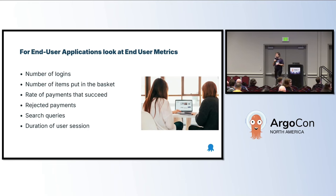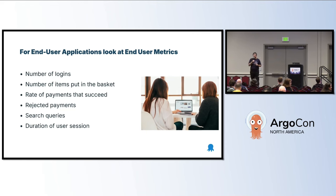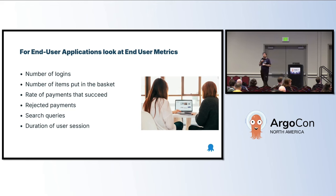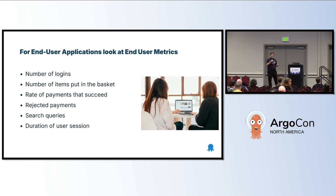Specifically for end-user applications — like applications with real humans — you should look at metrics that make sense for the humans. For example, for an eShop application, you want to know how many people go into the shop, what products they put in the basket, how often they buy, if they make payments. These are the things that matter. Because if your internal metrics say the application is successful but users cannot buy something, then the deployment has failed, obviously.